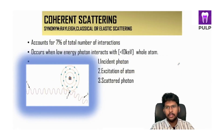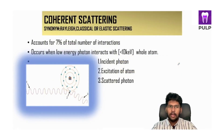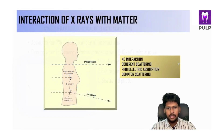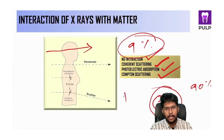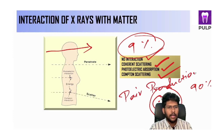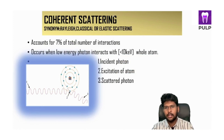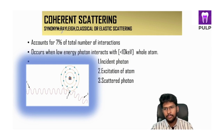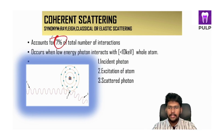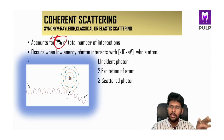Apart from these three types of interaction, you also have something known as pair production, which I will discuss at the end of this session. Moving on to the first type of interaction, it is known as coherent scattering — also known as Rayleigh, classical, or elastic scattering. It accounts for 7% of the total number of interactions and doesn't actually have any impact on the formation of the image on the x-ray.